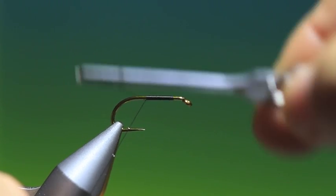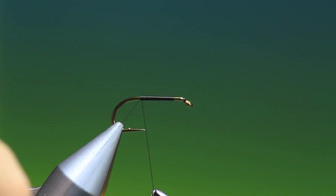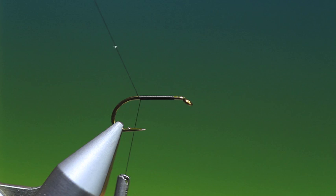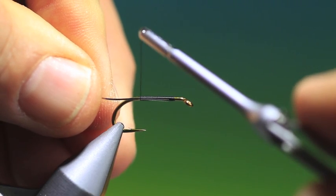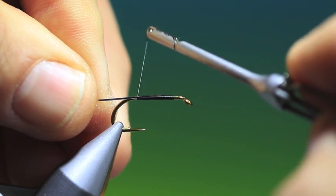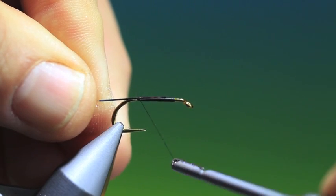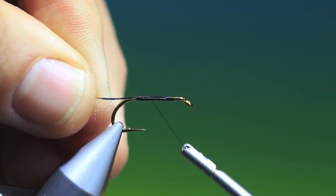So black tying thread onto the hook shank, go back to about there, remove that and we need some gold, fine gold tinsel I like to use here. So we tie this in, silver side out, this is a fishing fly so we don't have to worry too much about getting this absolutely perfect.